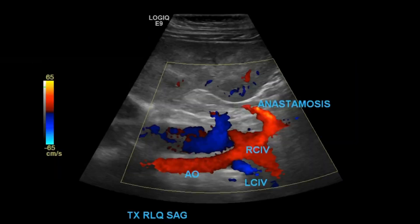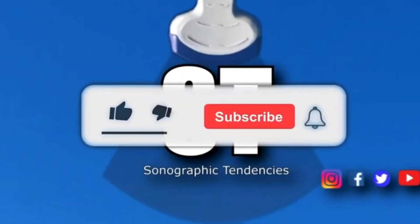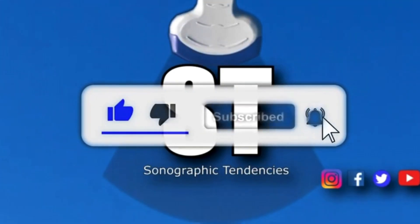And that's pretty much it — that's the entire protocol. Here is another image showing the aorta and IVC, with the bifurcation of the aorta, right and left common iliac veins, and the anastomosis coming off the common iliac vein. As mentioned, I'm not going over pathology in this one — I'll do a dedicated video for each complication for transplanted kidneys. Hope you found this useful — hit the like button, subscribe, and hit the notification bell. Stay tuned for more. Thank you.